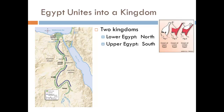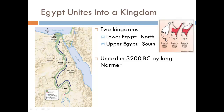These two kingdoms coexisted separately until about 3200 BC, when a person named King Narmer was able to unite them. Upper Egypt had a bowling pin-shaped crown, and Lower Egypt had one that looks like a chair. When the two kingdoms combined, the crowns were combined as well — so the ruler has both crowns on his head, representing one united Egypt.